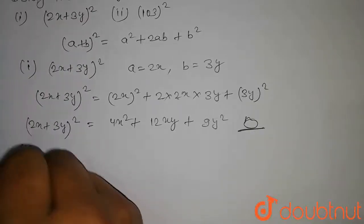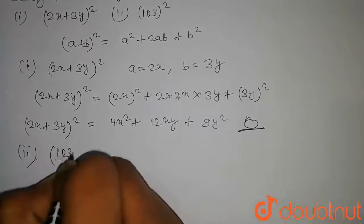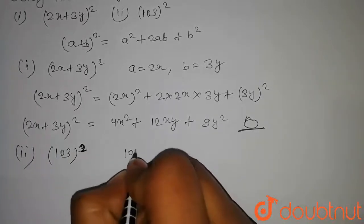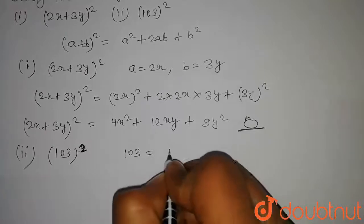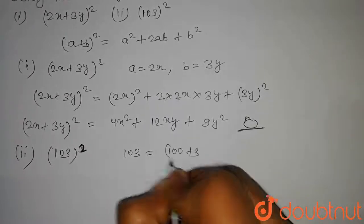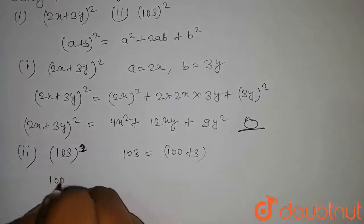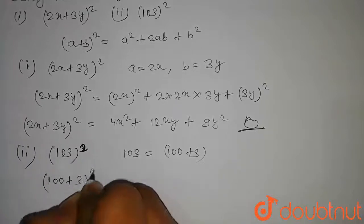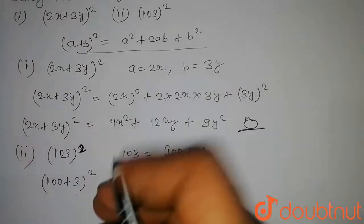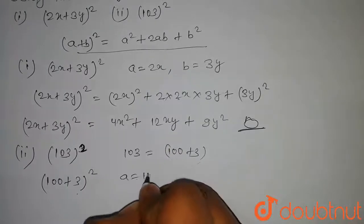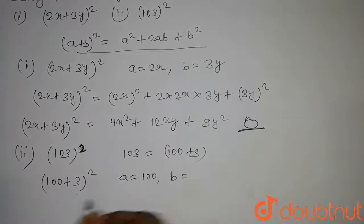Now, the second part of the question is 103² whole square. We can write 103 equal to 100 plus 3. So our question has become (100 + 3)² whole square. And on comparing this with this formula, we get a equal to 100 and b equal to 3.